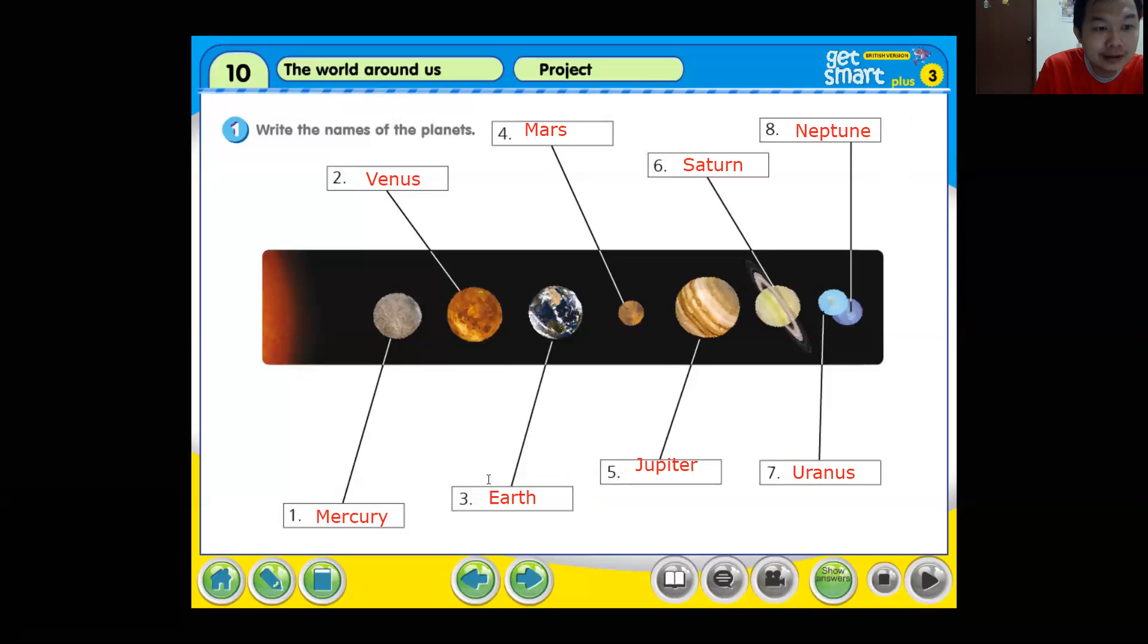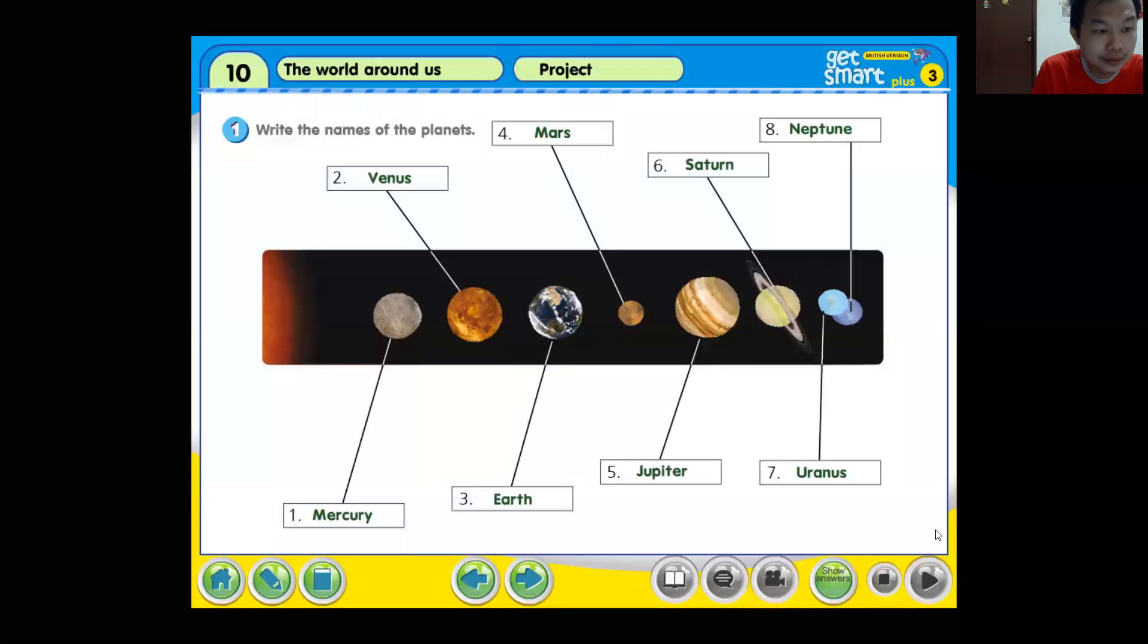So boys and girls: Mercury, Venus, Earth, Mars, Jupiter, Saturn, Uranus, and Neptune. Boys and girls, you manage to follow us. Let's see the answer. Yes, I'm correct. So let us proceed with our part two.